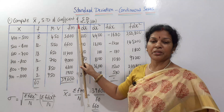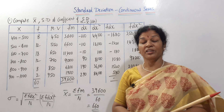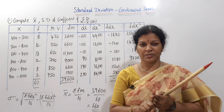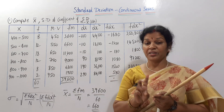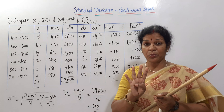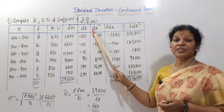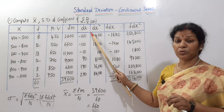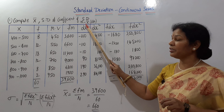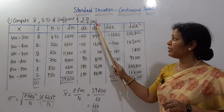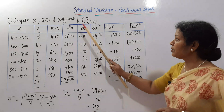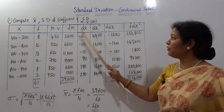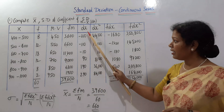Now we calculate standard deviation. We make a DX column. DX equals deviations from the mid value: DX = M minus x-bar. For mid value 450: 450 minus 660 = minus 210. For mid value 550: 550 minus 660 = minus 110.